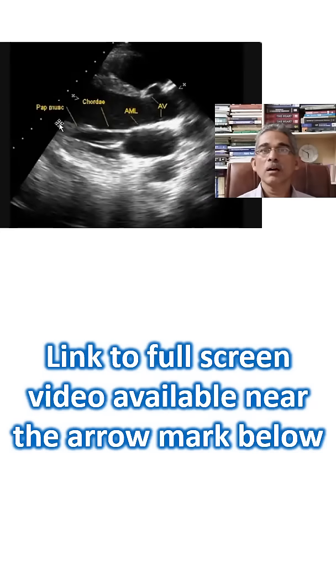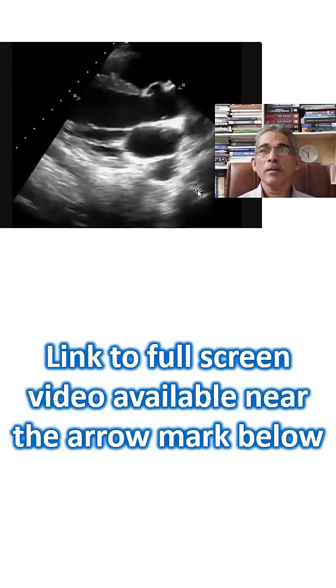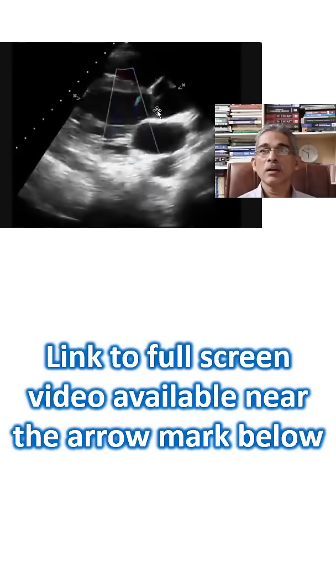Now you can see it, and here you can see the papillary muscle, chordae, anterior mitral leaflet, you can see the aortic valve there.